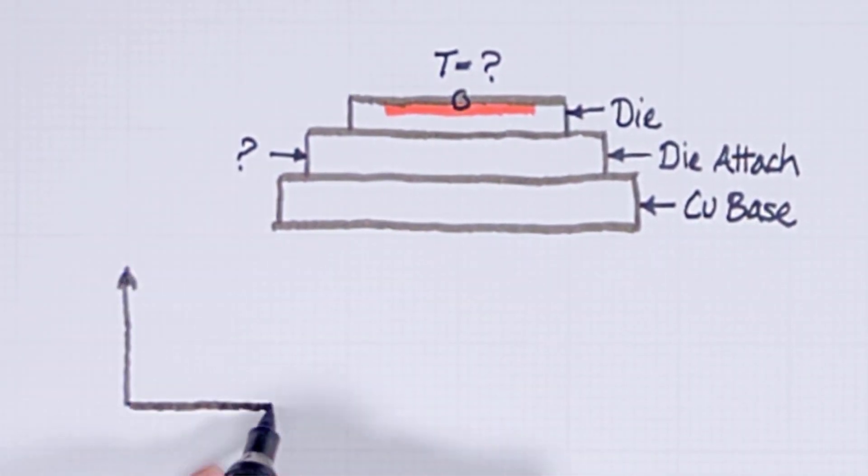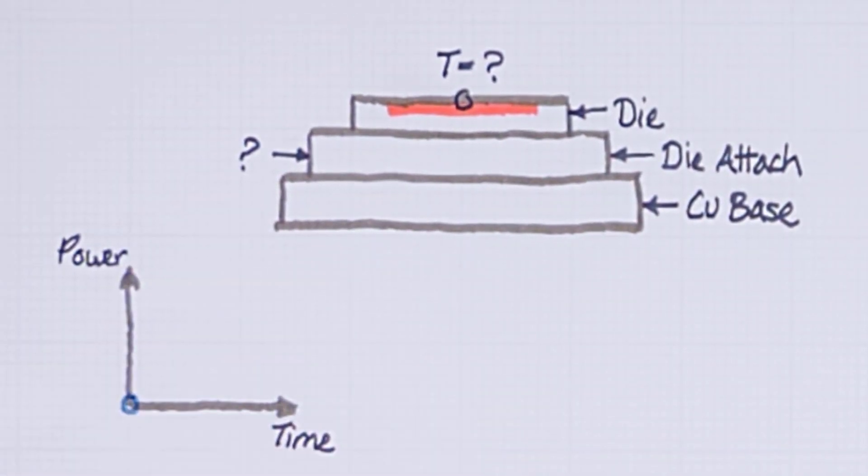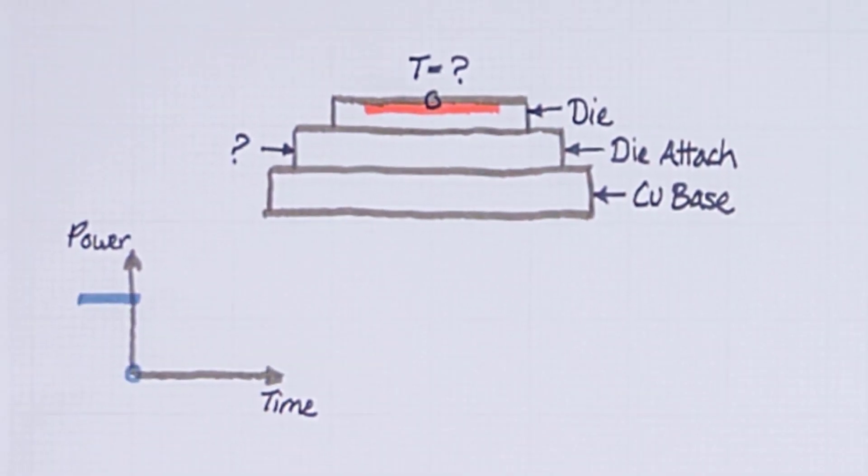We heat up the component by applying constant power. Then we start the measurement here at zero. At this point this area will get to a hot state and the heat will spread in circles.